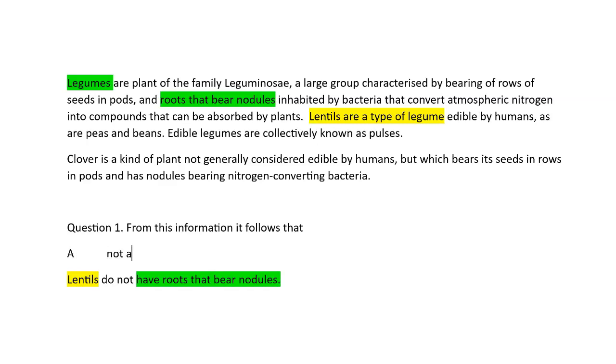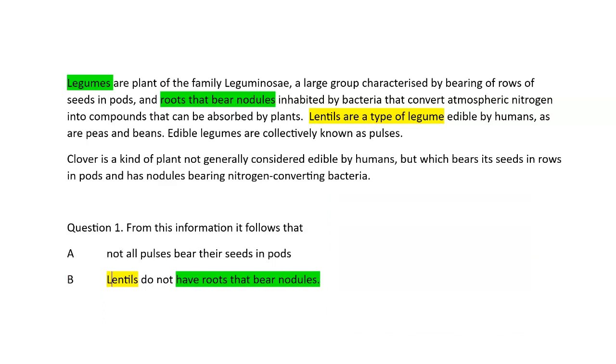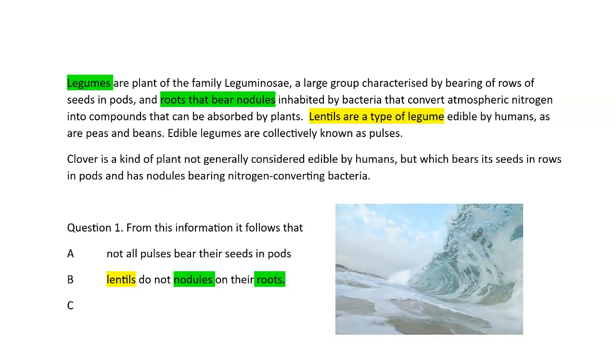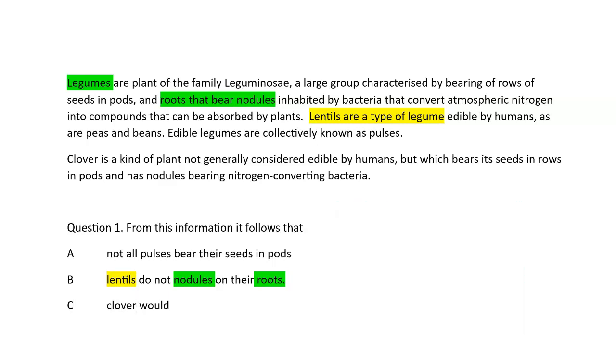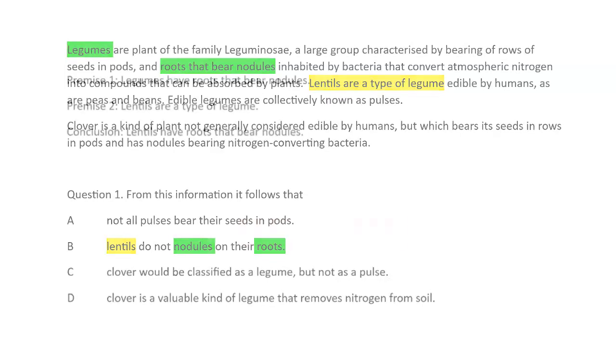And now we're going to give a few different options. Maybe we'll go A. Okay. And then maybe B. Instead of saying lentils do not have roots that bear nodules, maybe we'll write it slightly differently. We'll say that lentils do not have nodules on their roots. Okay. So this is drastically different to what we had before.